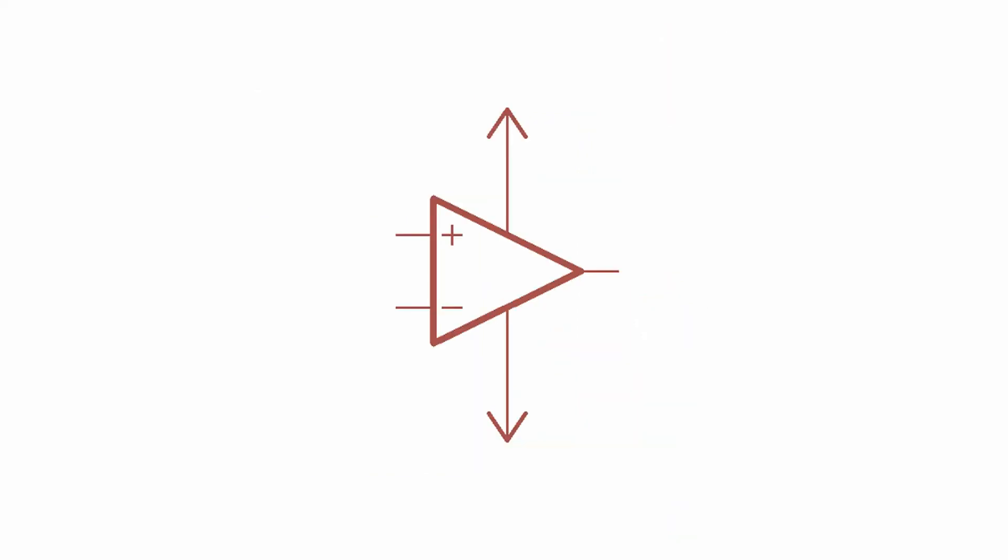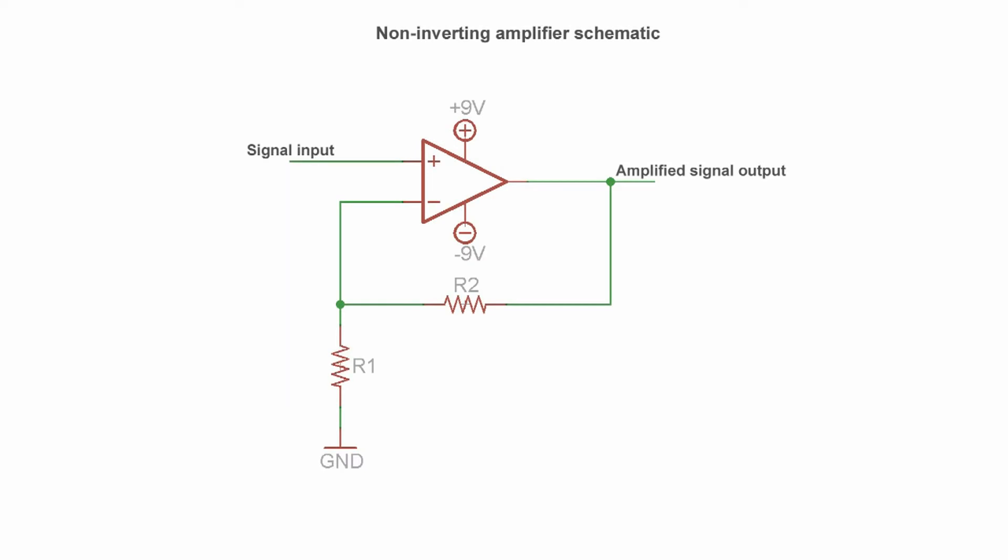Now this thing alone isn't going to be able to amplify anything. You're going to have to add a couple of other components to configure your op-amp to have the right gain. I'm going to show you one of the simplest amplifier circuits you can build, the classic non-inverting amplifier. With the non-inverting amplifier, you set the gain with resistors. The gain is given by 1 plus R2 over R1.